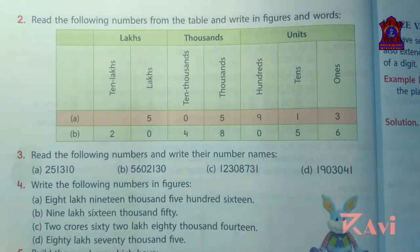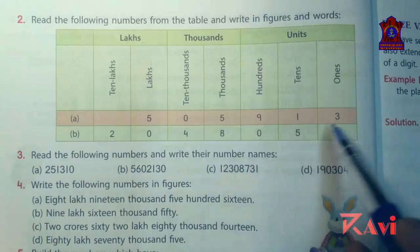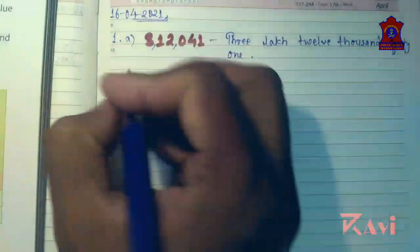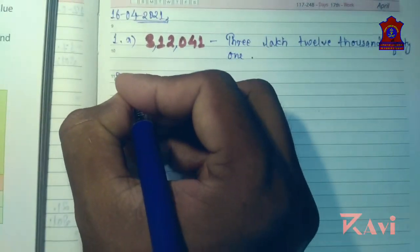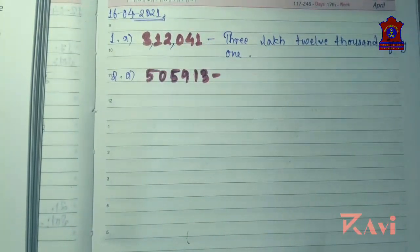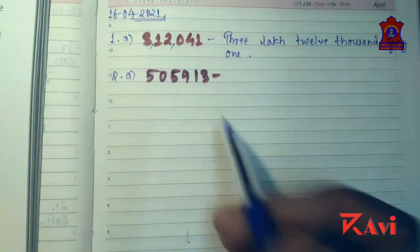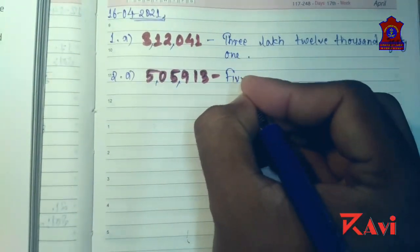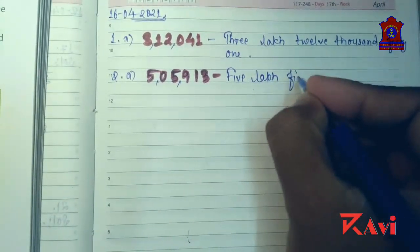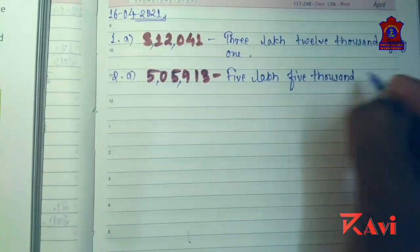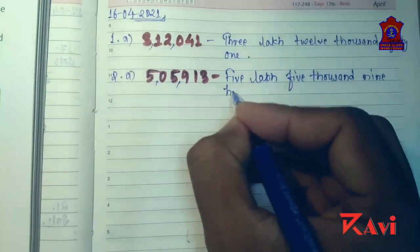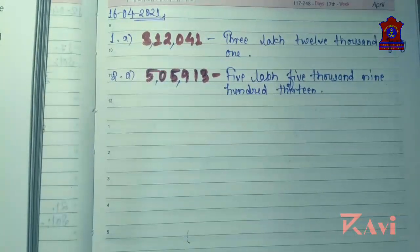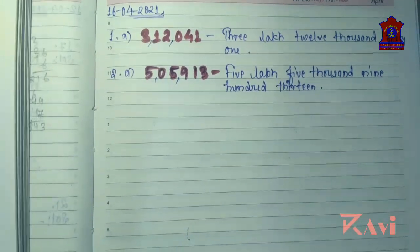Now read the following numbers from the table and write in figures and words. Question number two is similar to question number one, and the number is already given. Put the comma and write the number names — five lakh five thousand nine hundred thirteen. These are very simple questions, so try doing question number b by yourself.